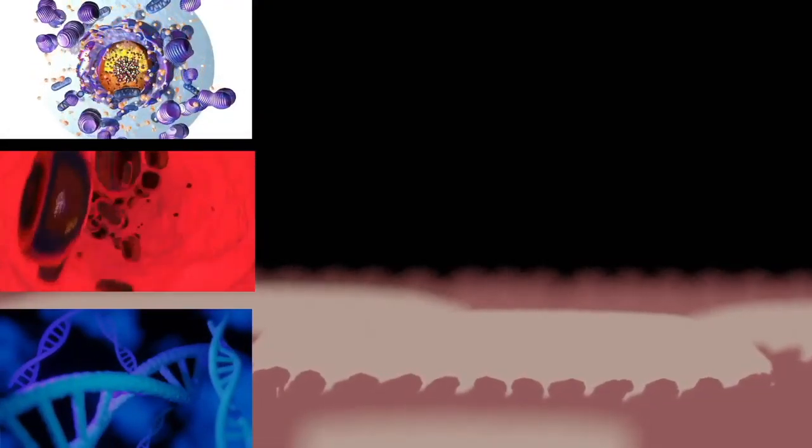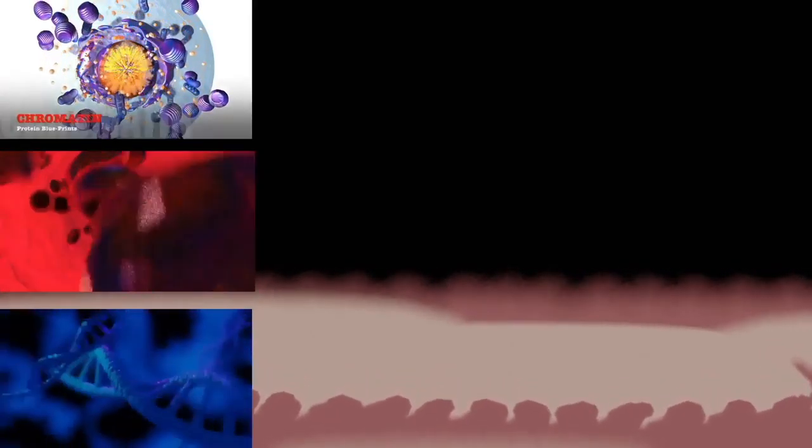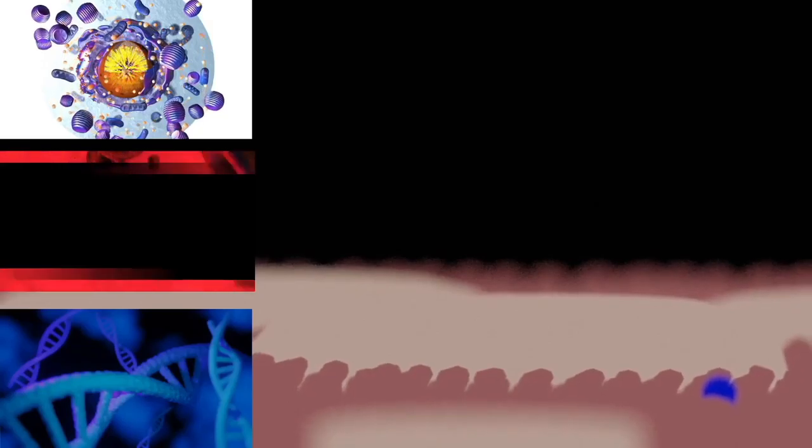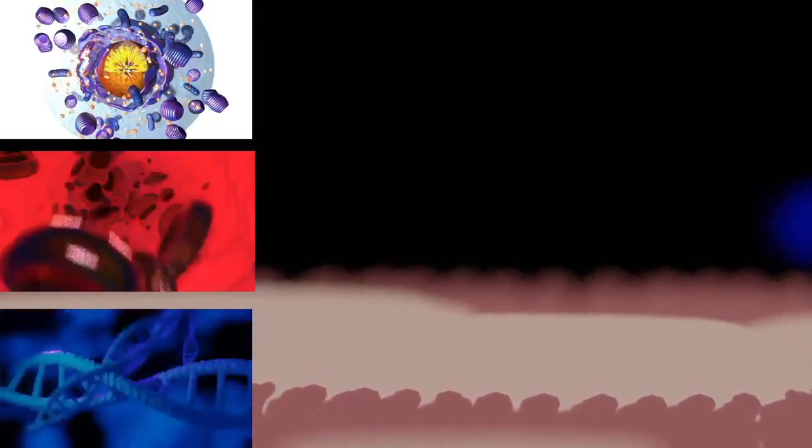Prokaryotic cell structure: Cell wall, except genera Mycoplasma and Thermoplasma. Description: the outer covering of most cells, protects the bacterial cell and gives it shape.